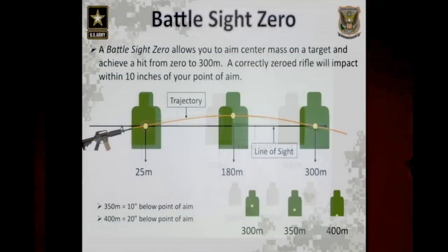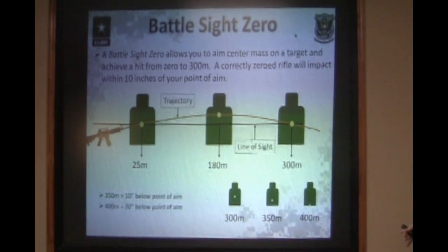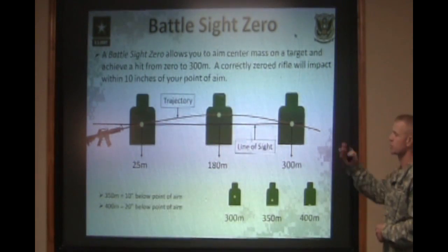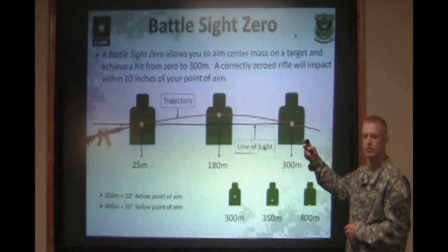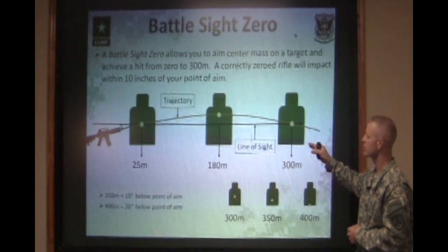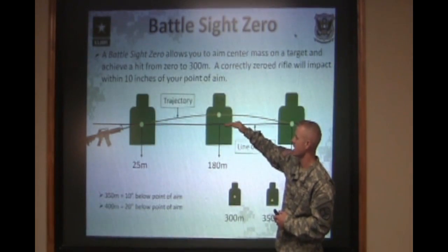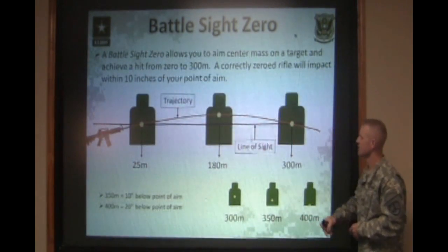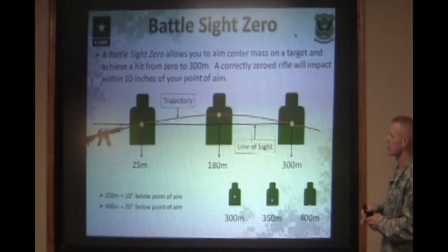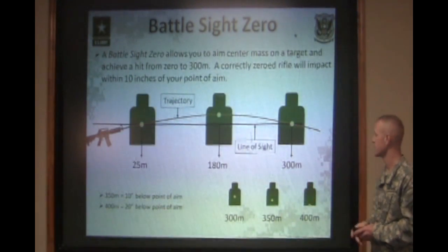This is how a battle sight zero works. A battle sight zero allows you to aim center mass on your target and achieve a hit from zero to 300 meters. The first place the bullet crosses our line of sight begins at 25 meters — point of aim, point of impact. Around the 180-meter mark is where the bullet is at its highest point in trajectory, going to be about 7 to 10 inches higher than your point of aim on that target. Then that bullet comes back down and crosses your line of sight again at 300 meters, letting you achieve a point of aim, point of impact hit on that target.